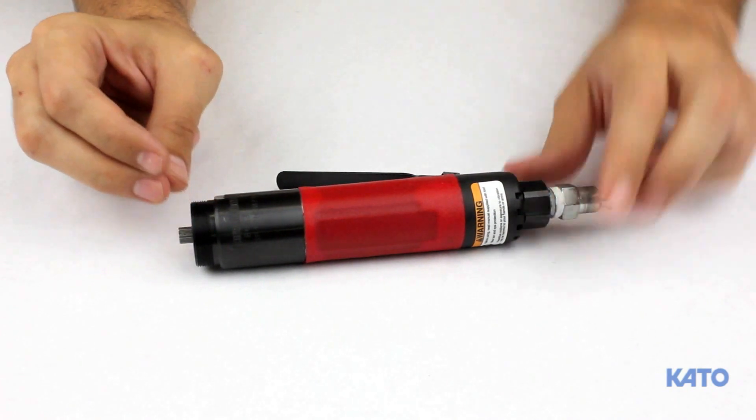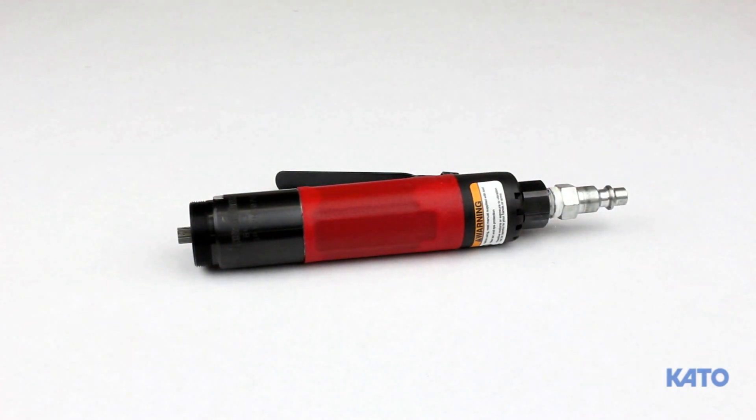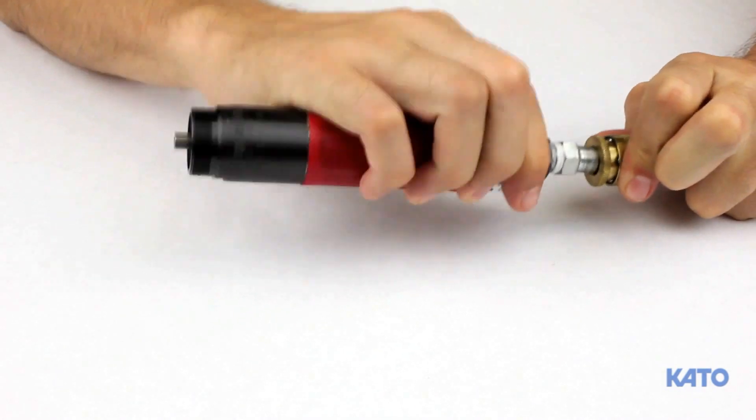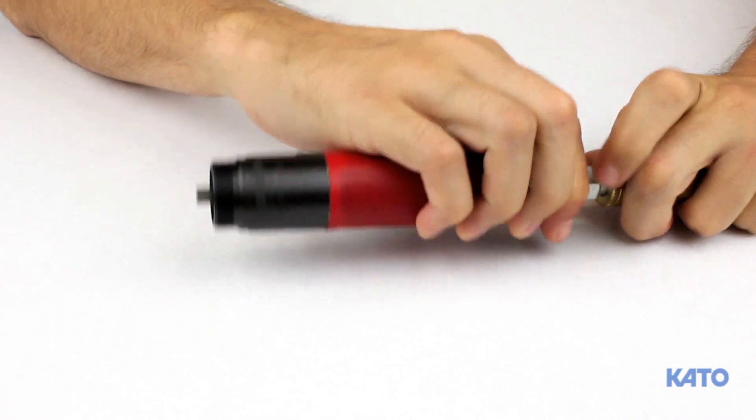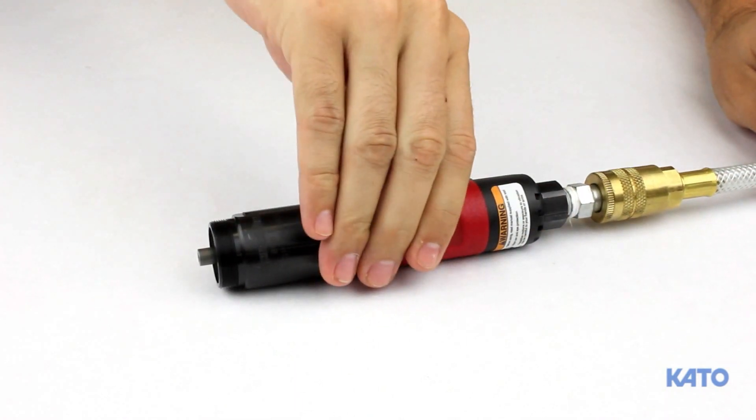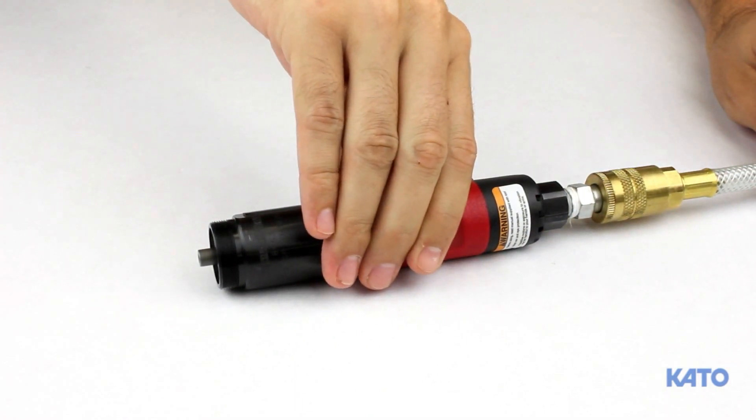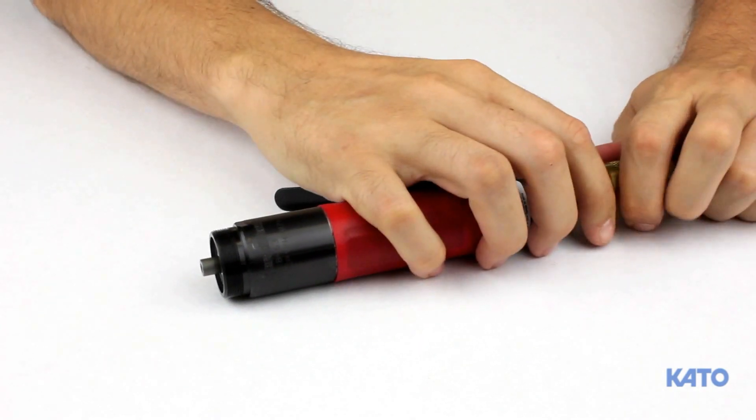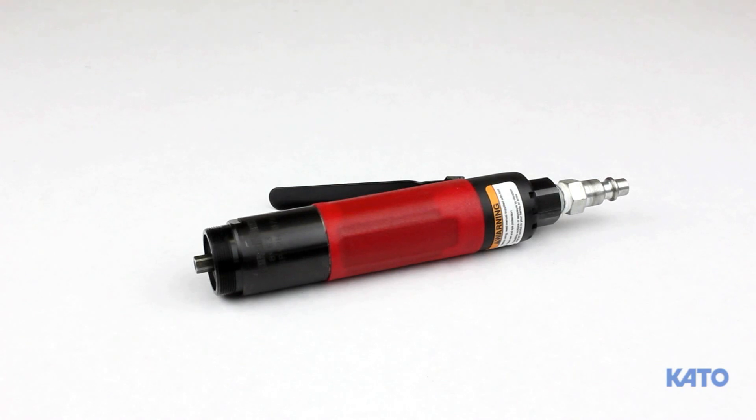Connecting the air hose will cause the air motor to run in reverse or counter-clockwise. It is designed to do that. Pressing the lever will cause the air motor to run forward or clockwise. Release the lever, and the air motor runs in reverse. There is no on or off switch on the air motor. Once an air supply is connected, it will continue to run.